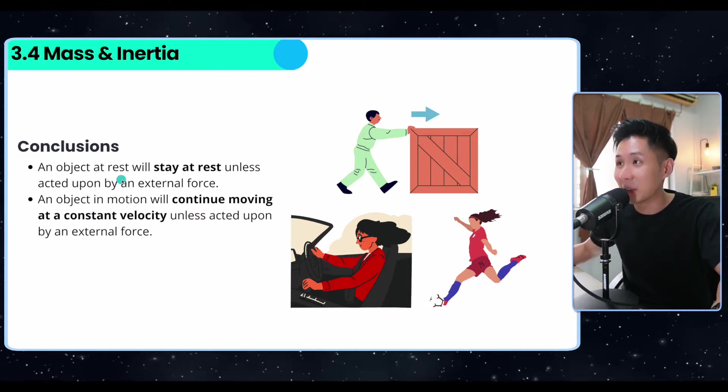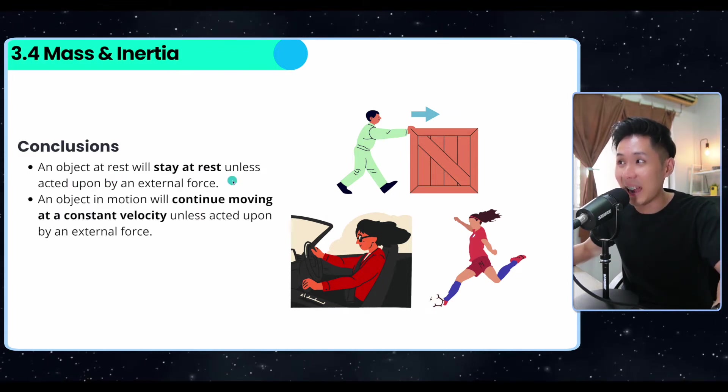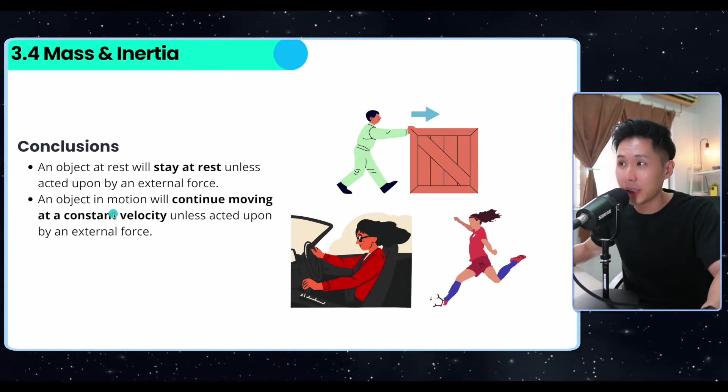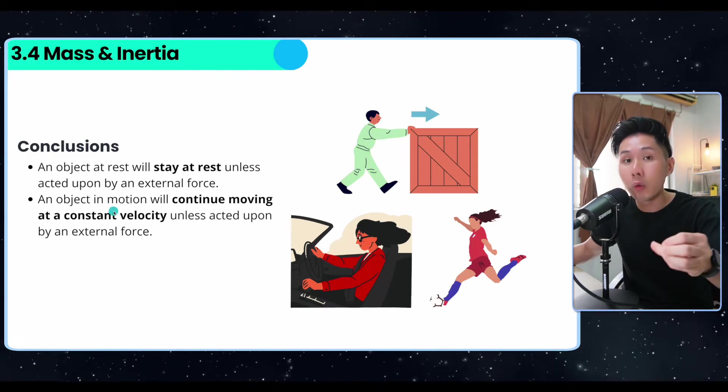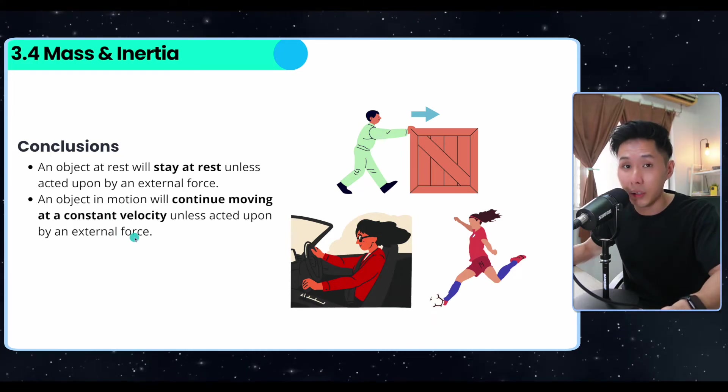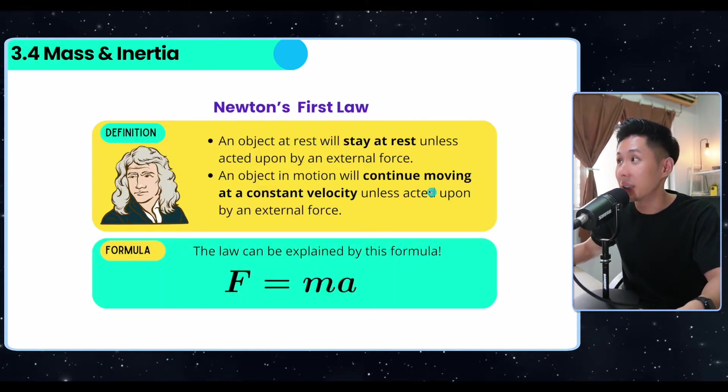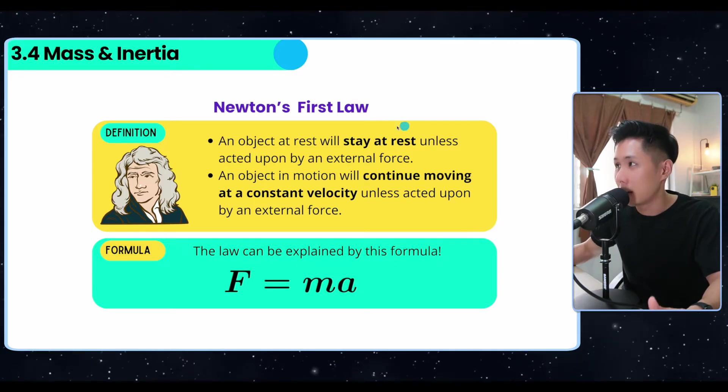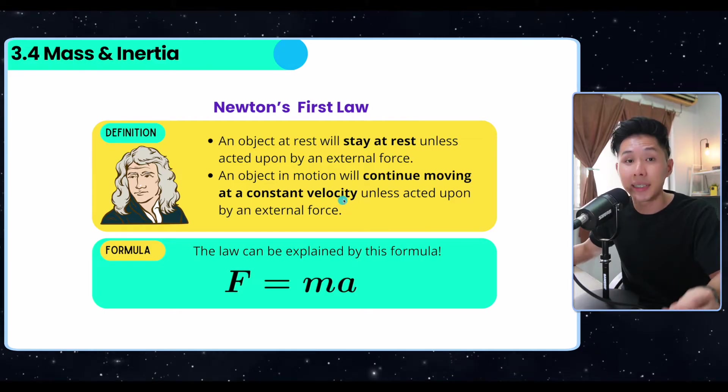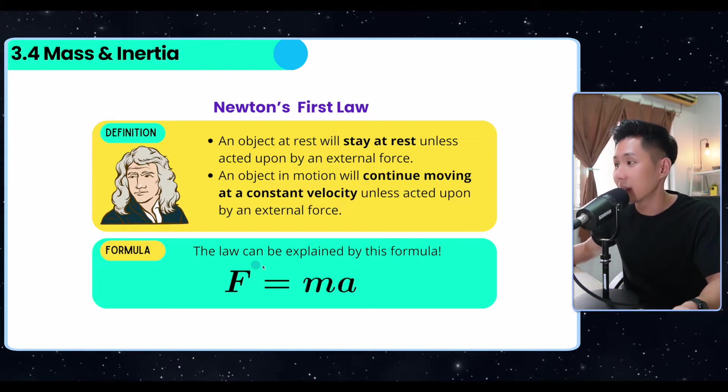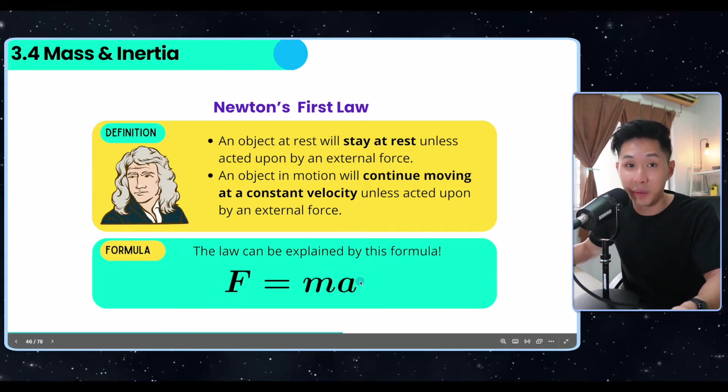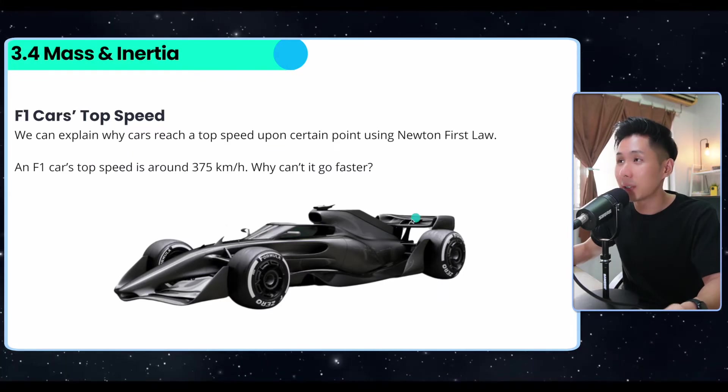At this point you might be wondering, why then when I remove my force, do they stop moving? That's because we have an external force acting on them called friction. What if there is no friction? Technically, the object should move forever. Let's conclude that an object at rest will stay at rest unless acted upon by an external force. And an object that is moving will always move at constant velocity unless acted upon by an external force like friction. That is exactly what Newton's first law says. This law can be explained by this formula: without force, there will be no acceleration regardless of the mass.